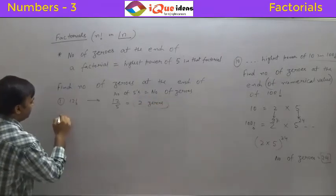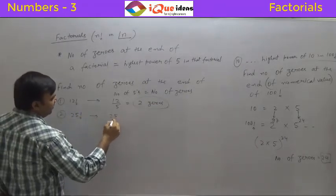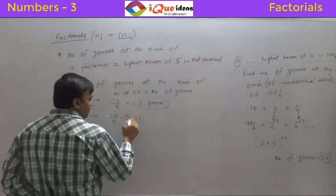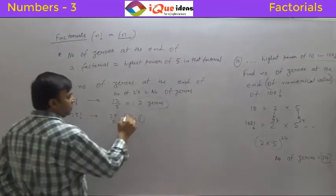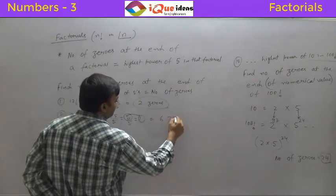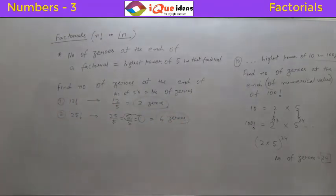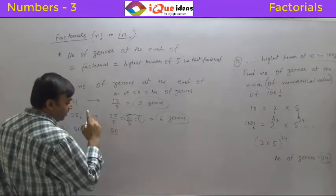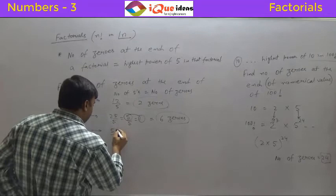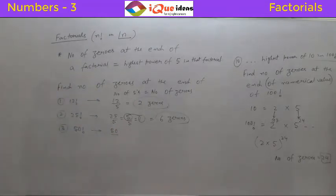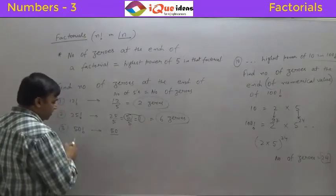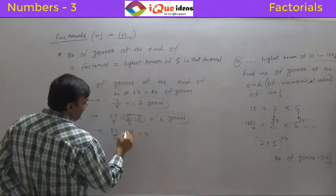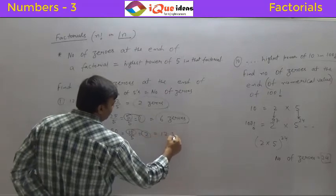For 25 factorial: 25 divided by 5 is 5, then 5 divided by 5 is 1, no further division possible. So 5 plus 1 equals 6 zeros. For 50 factorial: don't just count multiples of 10 — there are extra 5s like in 25. Divide 50 by 5 to get 10, then 10 by 5 to get 2. Add them: 10 plus 2 equals 12 zeros.